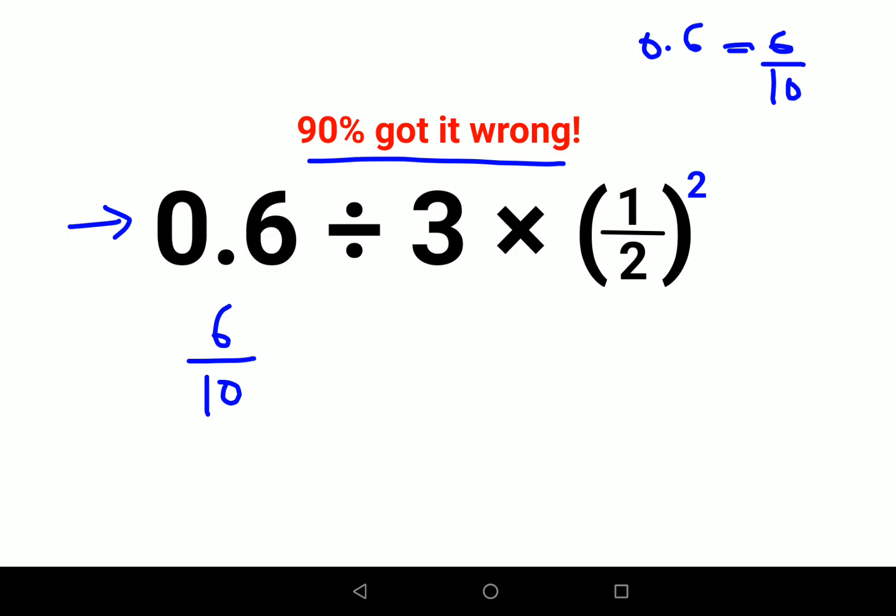Now this division sign, whenever you have a division sign between two numbers, you can convert the division sign into multiplication by using the law of KCF. That means keeping the first number as it is, changing the division sign to multiplication, and flipping the next number which is 1 upon B.